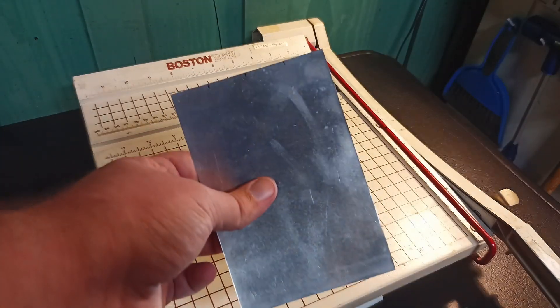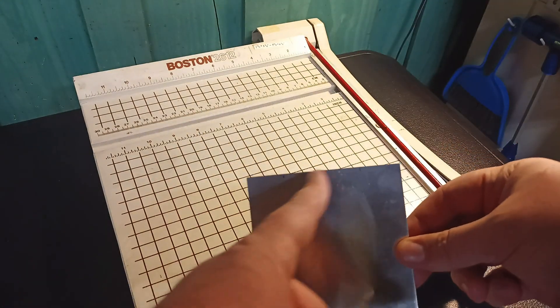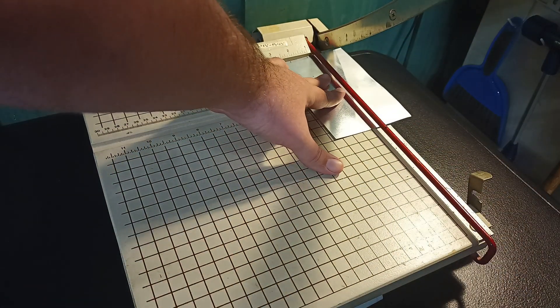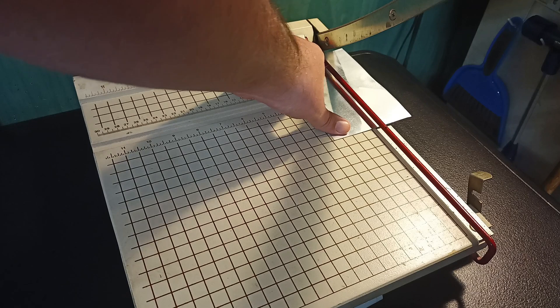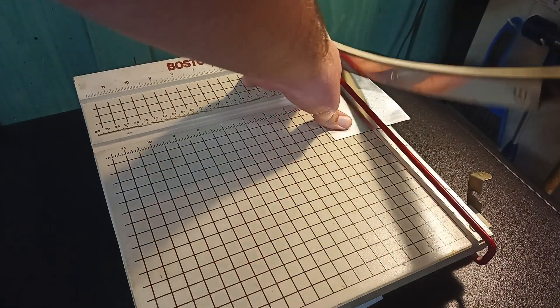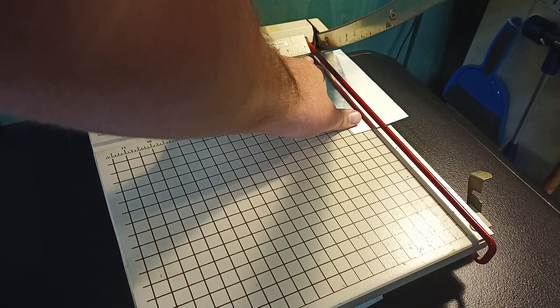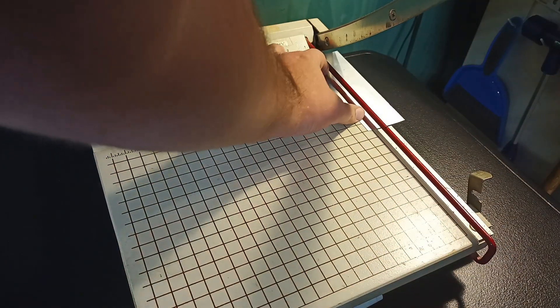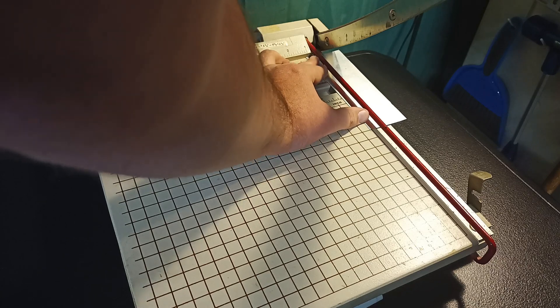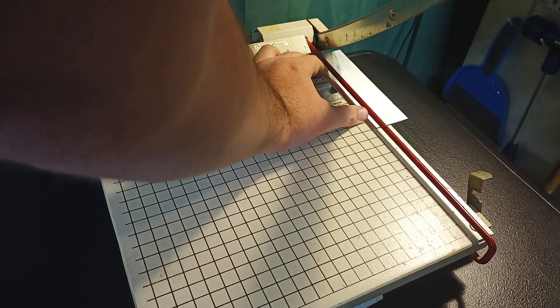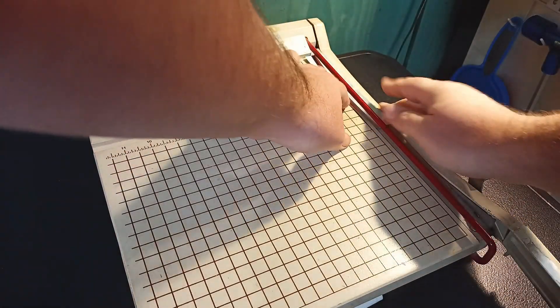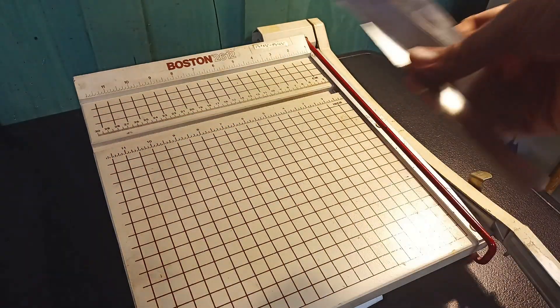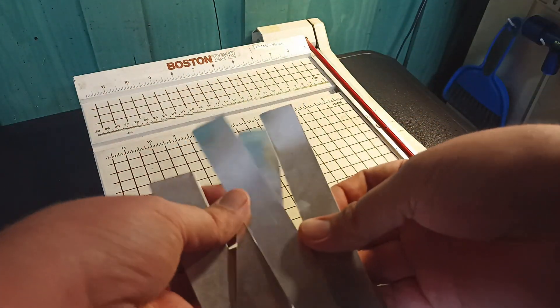Alright, an easy way to cut these aluminum strips is just to mark out one inch increments and then just use a paper cutter. I did this with scissors before and after you use one of these, you'll never go back. The last one's always the hardest. But just like that, you have all your strips cut and they're ready to be fed in.